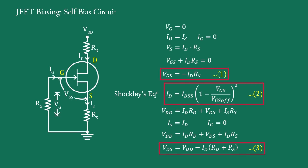Therefore VDS equals VDD minus ID into bracket RD plus RS. Using equations 1, 2, and 3, operating point is determined.